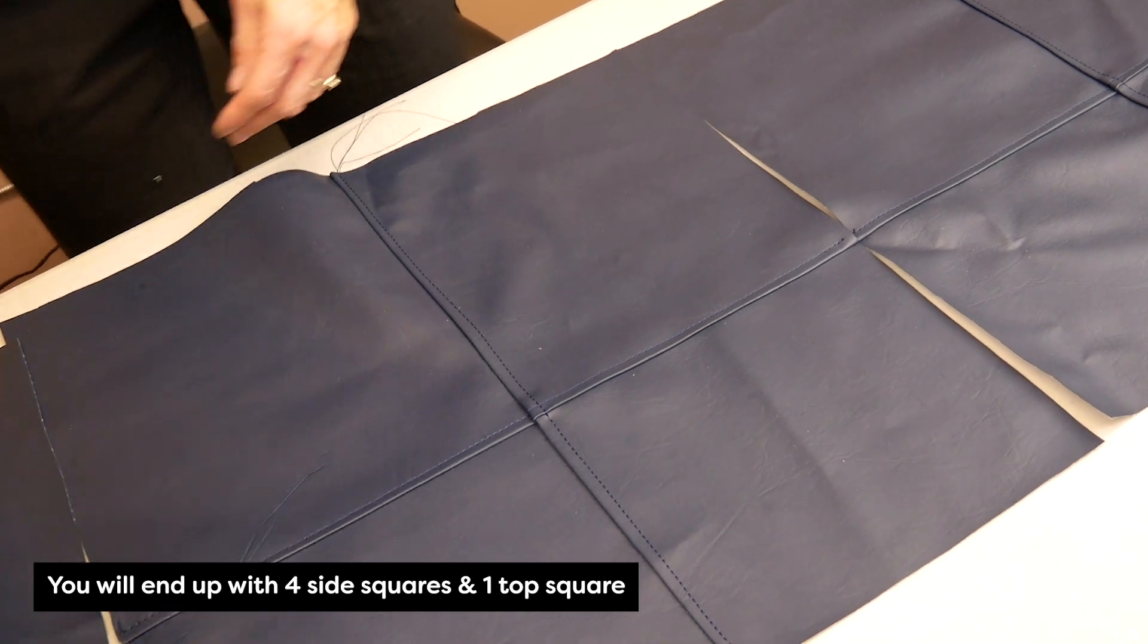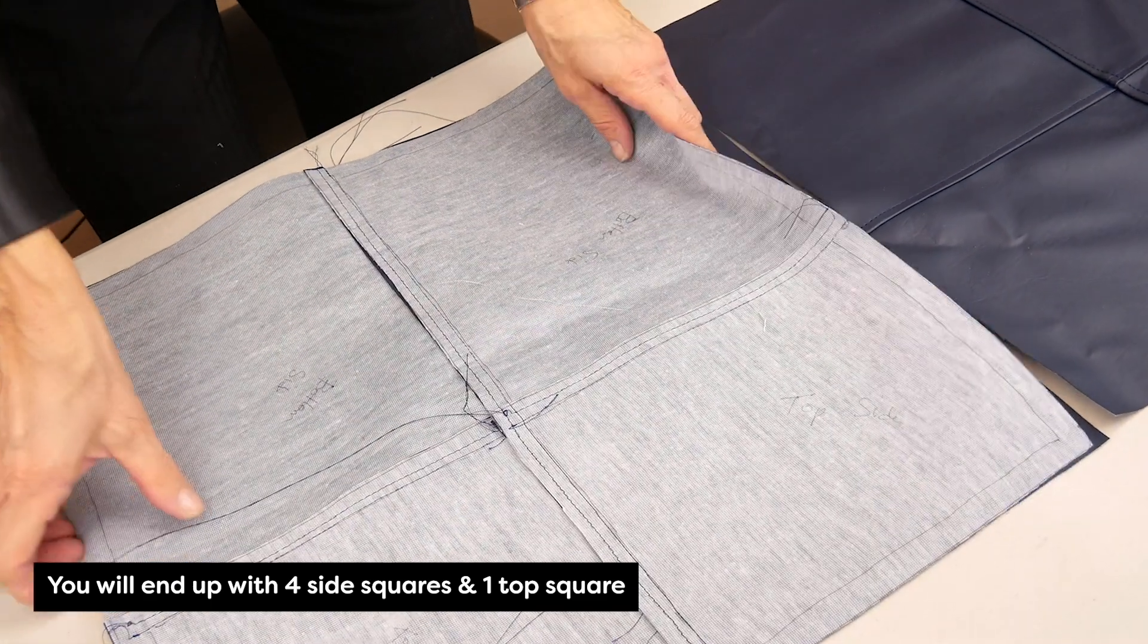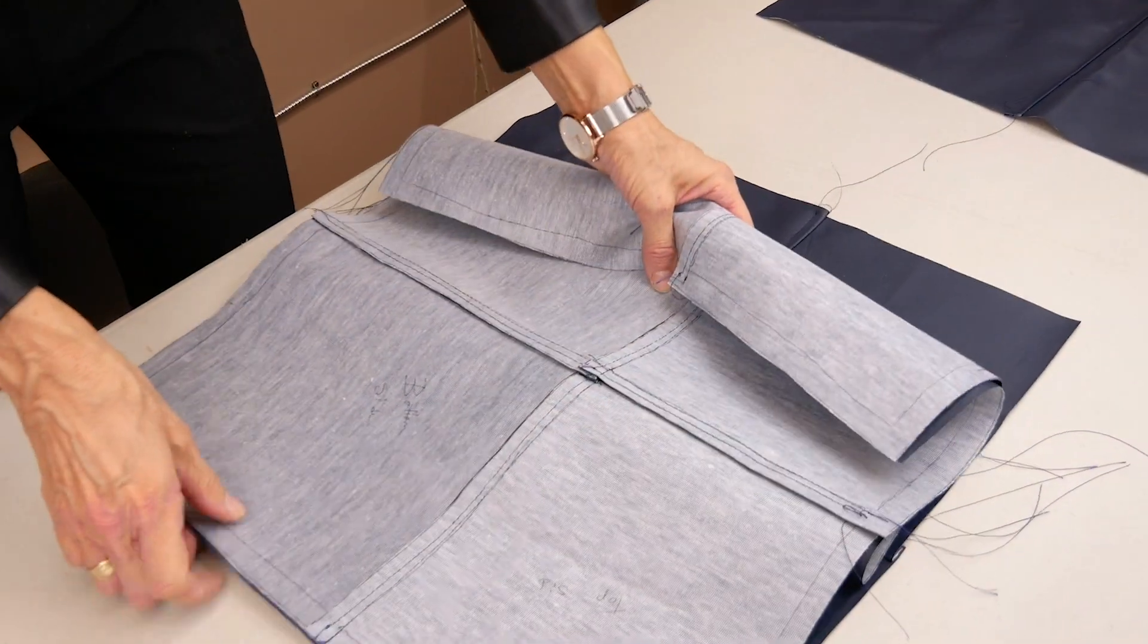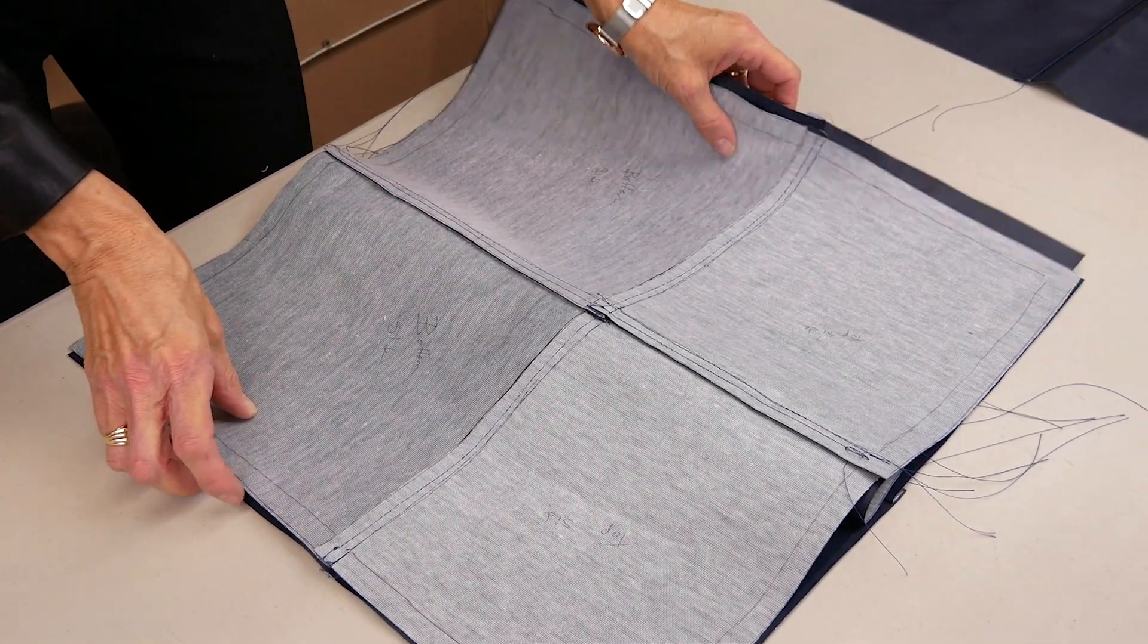You will end up with four side squares and one top square. Join the seams on the four side squares to make a circle. Make sure the longer rectangular pieces are at the bottom all the way around to allow for going under the cube.